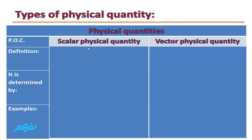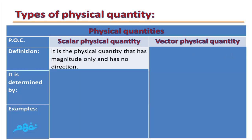Let's compare between Scalar Physical Quantities and Vector Physical Quantities. A Scalar Physical Quantity is a physical quantity that has magnitude only and has no direction. Magnitude means numerical value and unit. For example, to measure the length of your desk: the length is about 1.5 meters. 1.5 meters is called the magnitude. We don't need to know the direction of the desk to define its length.